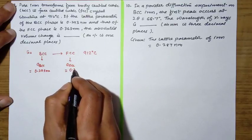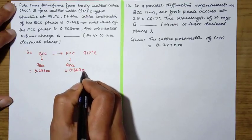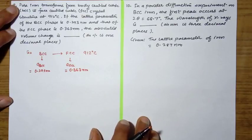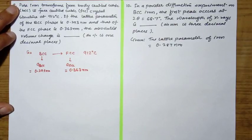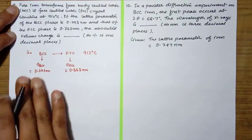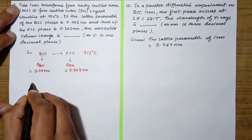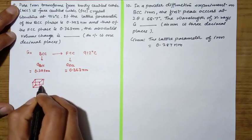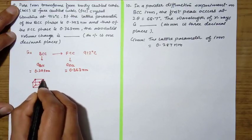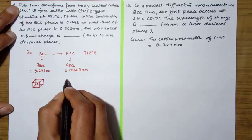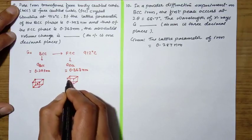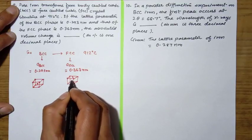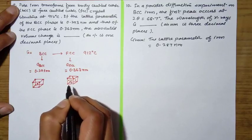To calculate the volume change, we need to first remember the volume of the crystal for BCC and FCC. The number of atoms per unit cell in BCC is 2, and in FCC the number of atoms is 4.